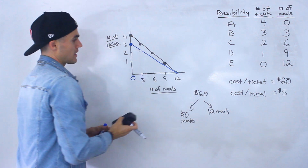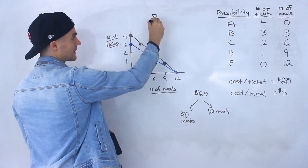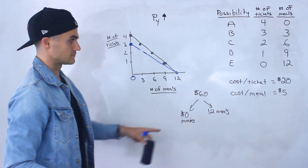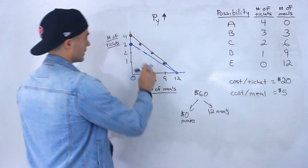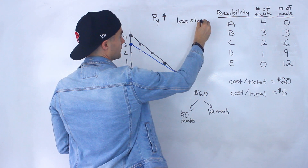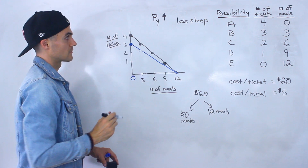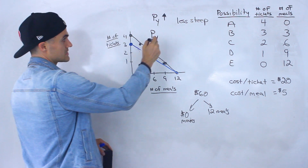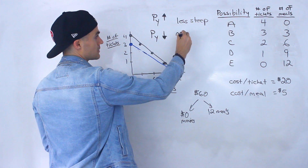In general, if you take the price of the good on the y-axis and increase it — like we just did with the ticket going from $15 to $20 — the budget line gets less steep. This point here will shift down.